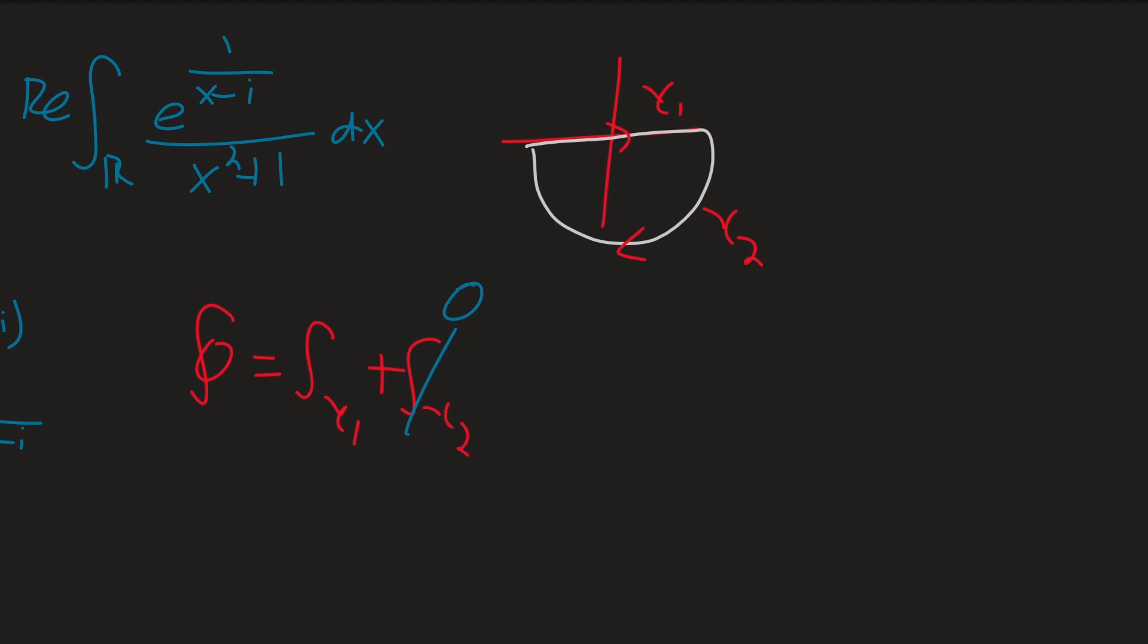But this right here, the integral over γ₁, is just going to be equal to I right here, where I is just going to be this, our integral right there. And again, by the residue theorem, this is just going to be, normally it would be 2πi times our residues.